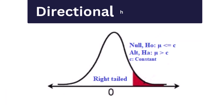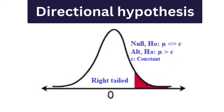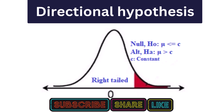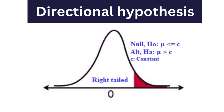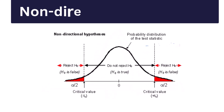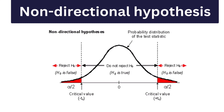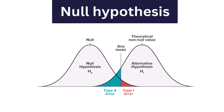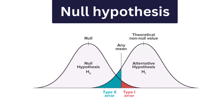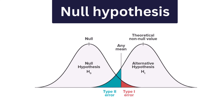Three, directional hypothesis: it shows how a researcher is intellectual and committed to a particular outcome. The relationship between the variables can also predict its nature. Four, non-directional hypothesis: it is used when there is no theory involved. It is a statement that a relationship exists between two variables without predicting the exact nature or direction of the relationship. Five, null hypothesis: it provides a statement which is contrary to the hypothesis. It is a negative statement, and there is no relationship between independent and dependent variables. The symbol is denoted by H0.